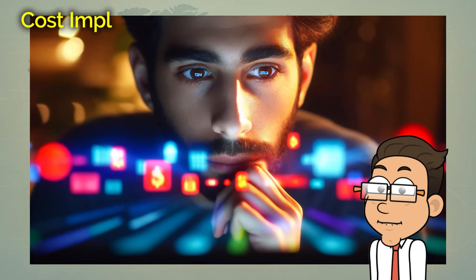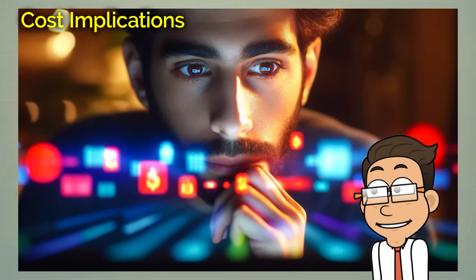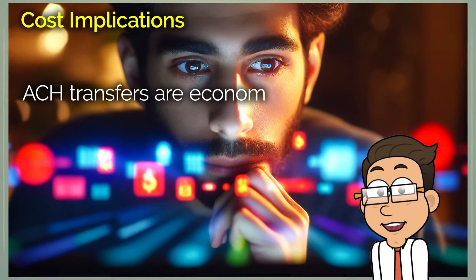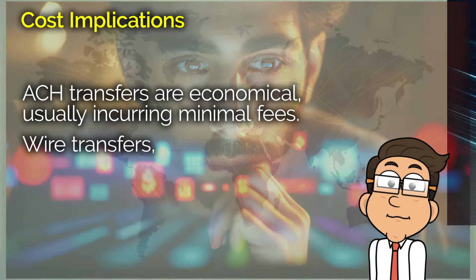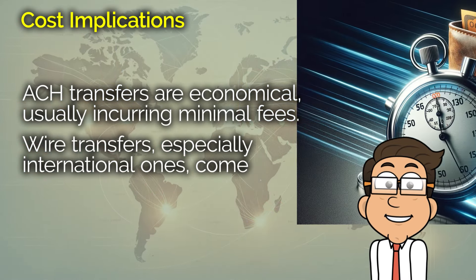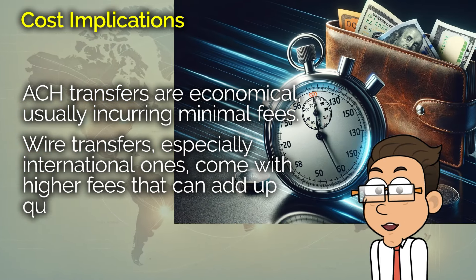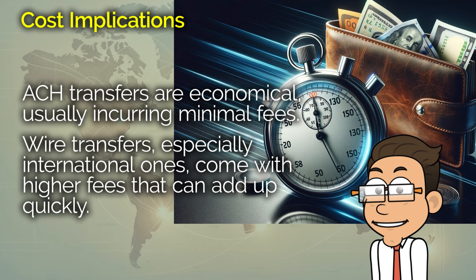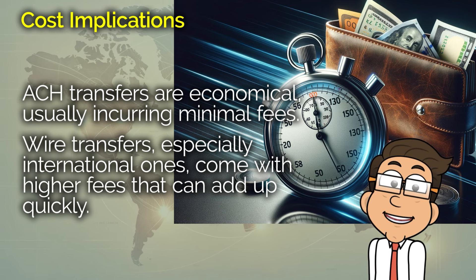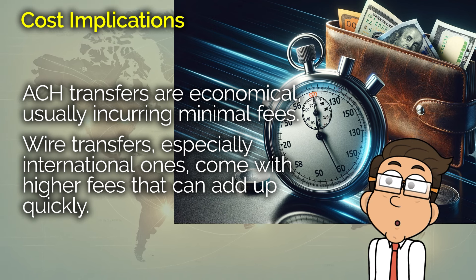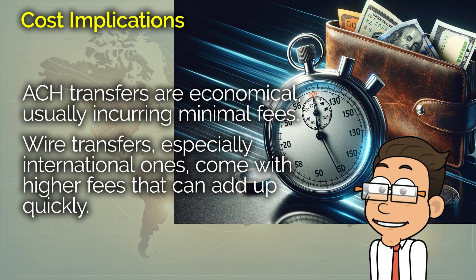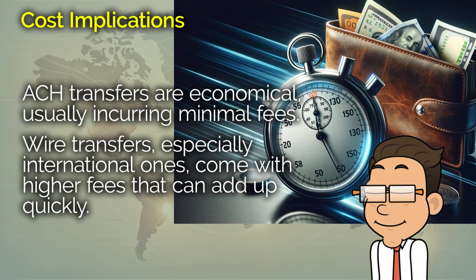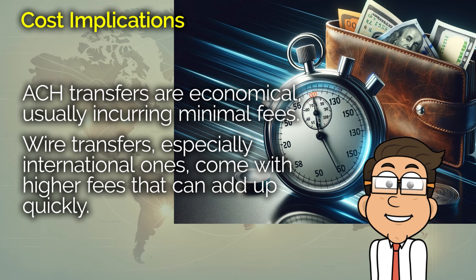How do you set up one of these transfers? Setting up an ACH transfer can often be done entirely online. And once you've set it up for recurring payments, like your rent or mortgage, it's pretty much set it and forget it. Wire transfers, however, might require you to visit your bank, although many banks these days allow you to do it online or via their mobile app. Regardless, you'll need to have some specific information, like the recipient's bank account number, their bank's SWIFT or IBAN, and routing number.